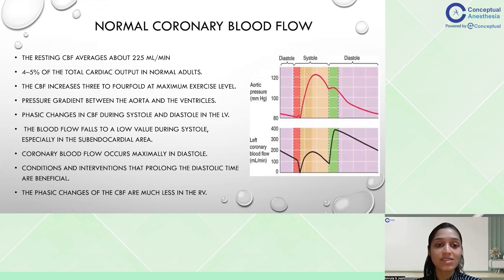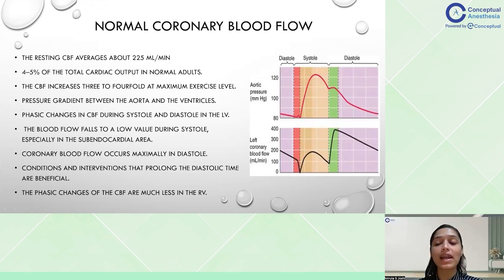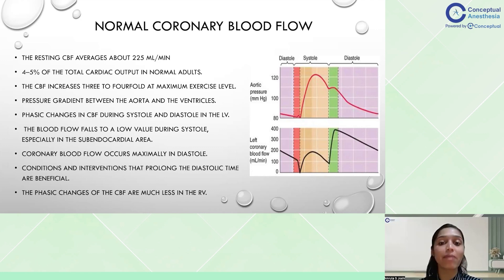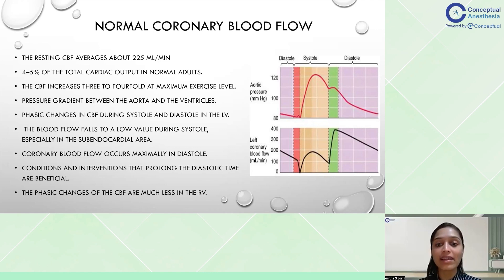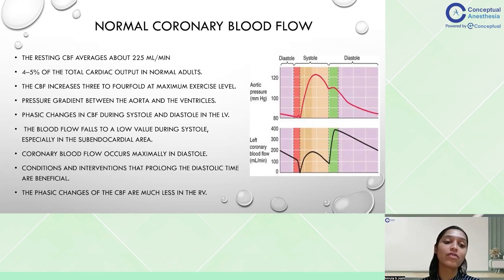The resting coronary blood flow averages about 225 ml per minute, which is about four to five percent of the total cardiac output in a normal adult. This blood flow increases three to four folds at maximum exercise level — and by exercise we don't mean only physical exercise; it can be anything stress-related that requires equivalent output.